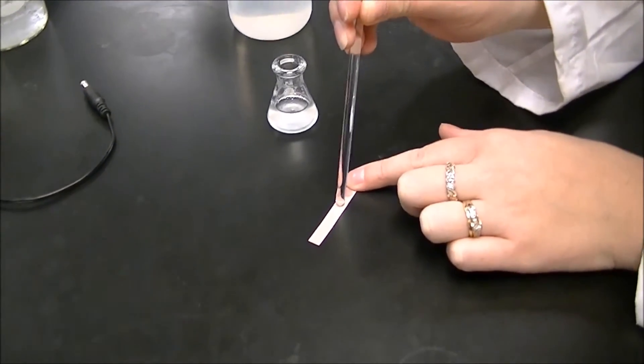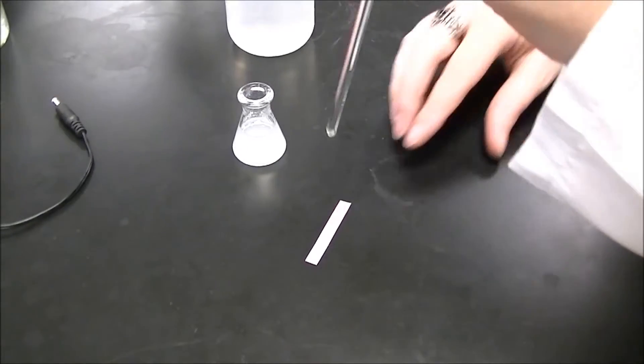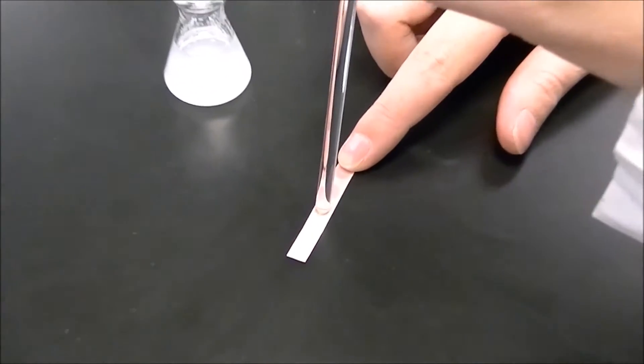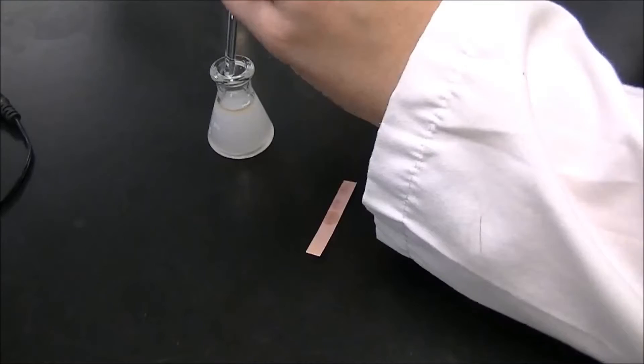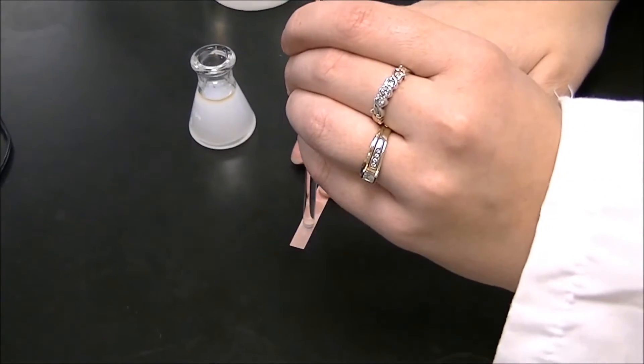Check the pH every 15-20 drops of base by using a glass stir rod and letting a drop touch the red litmus paper. Eventually, you'll see a blue dot indicating that your solution is now basic.